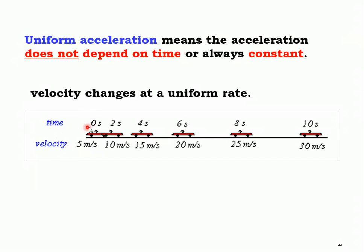For example: at time 0 seconds, the initial velocity is 5 m/s. After 2 seconds, the velocity increased by 5 m/s. After another 2 seconds, it increased by another 5 m/s again. At 6 seconds it becomes 20 m/s, at 8 seconds 25 m/s, and at 10 seconds 30 m/s. The time interval is 2 seconds and the velocity increases by 5 m/s every single time, so the velocity changes at a uniform rate.